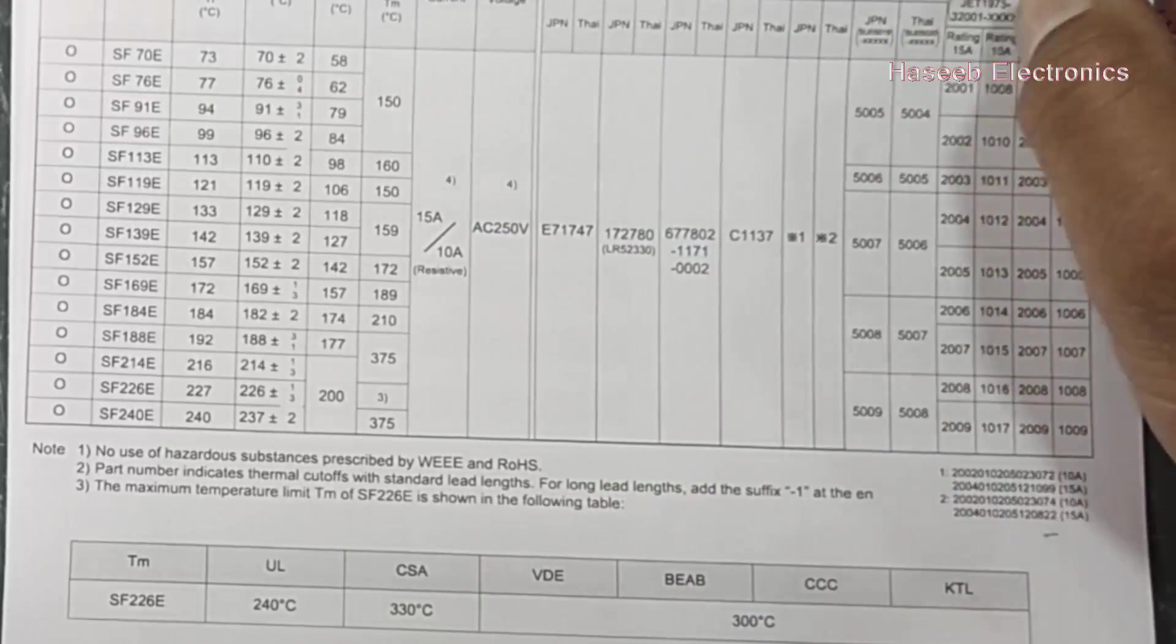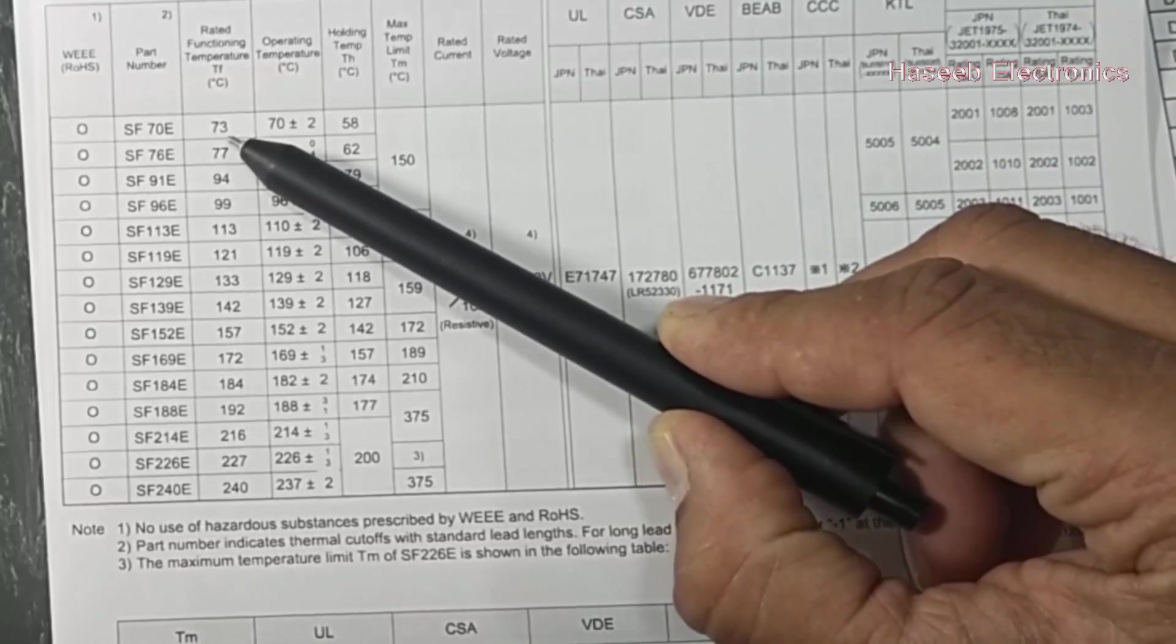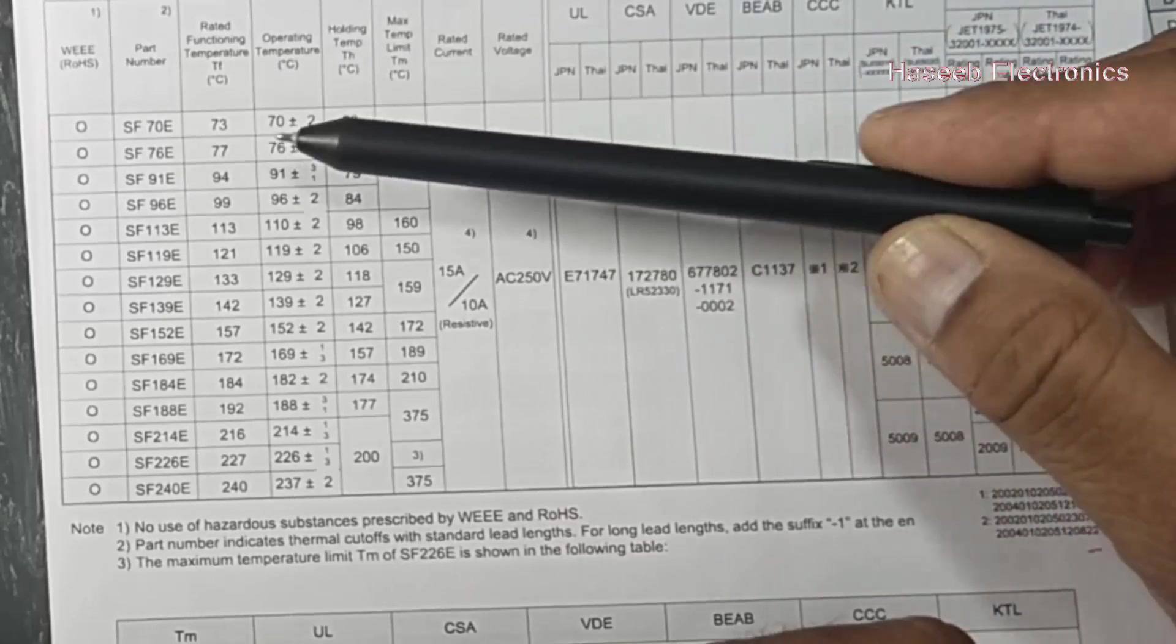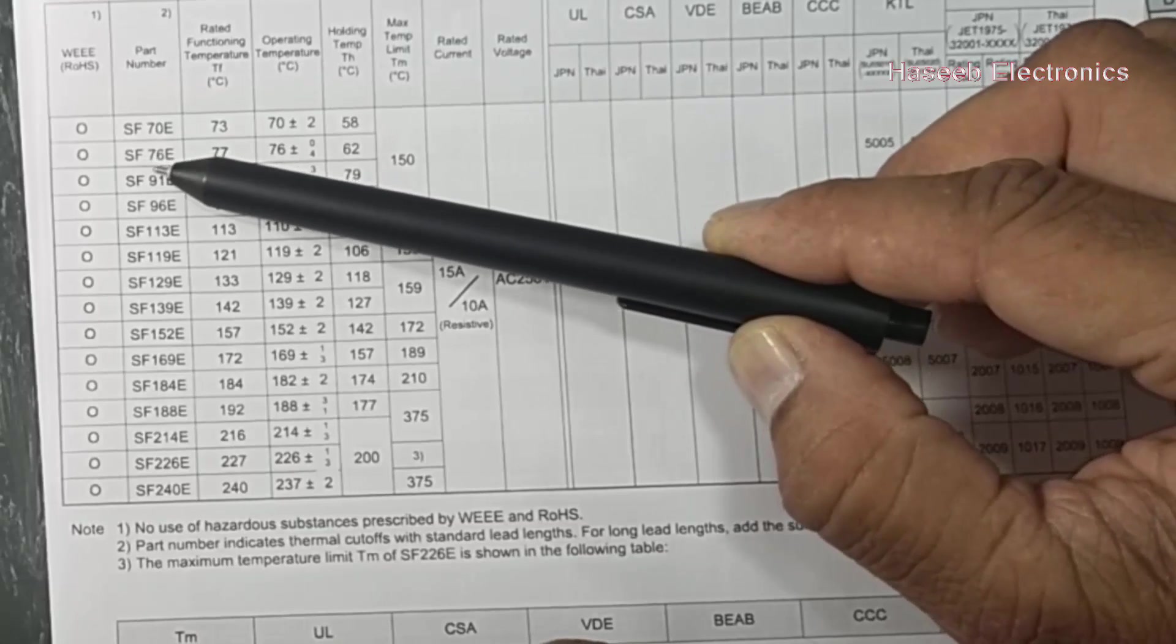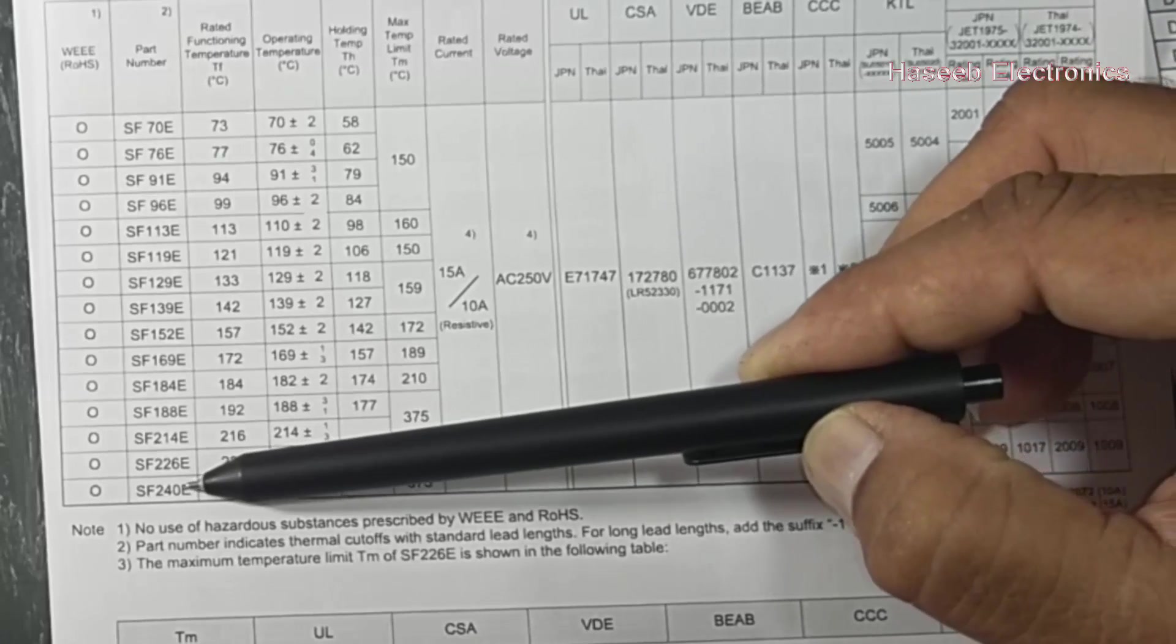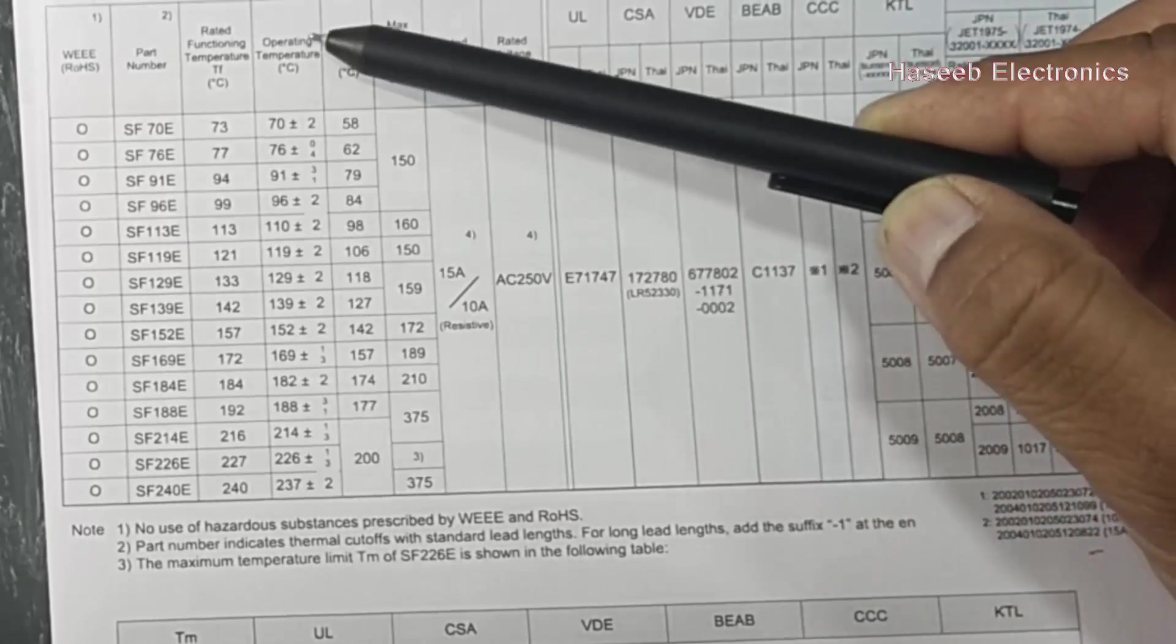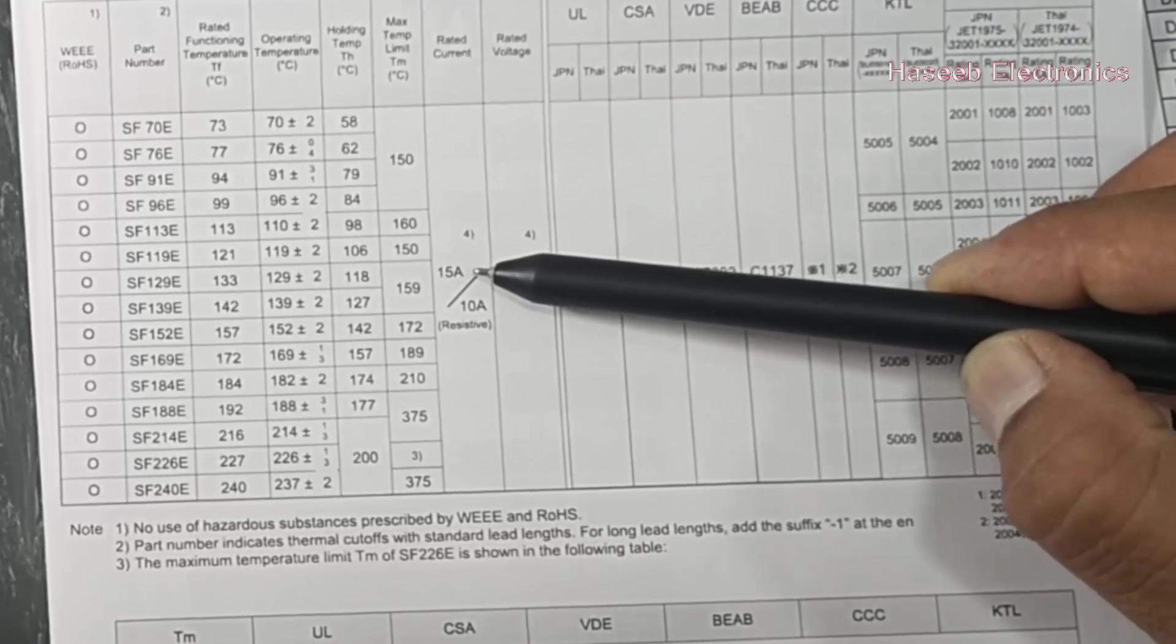If you go to the datasheet, it has SF 70E, so that means it is 70 degree temperature operated, from 70 plus minus 2 to 73 degree functioning temperature. Friends, I hope this video is good for you. If it is good, hit the like button please. If you have not subscribed to my channel, subscribe it. Then different part numbers are here - SF 76E means 76 degree. If it is SF 240.